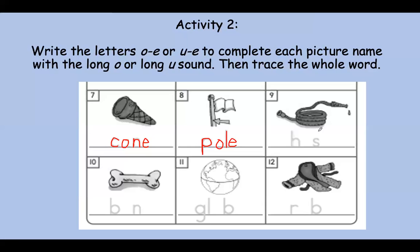Number nine. This is a hose. You could find these in the garden to water your plants, or on a fire engine — they have a hose. What do you hear in the middle? Hose. You heard it. Good job, friends. It's long O. Trace hose.